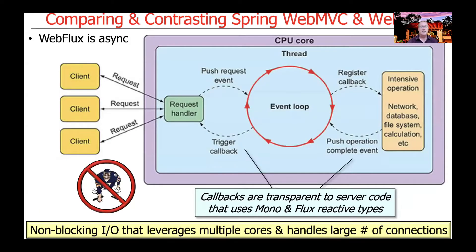In contrast, WebFlux is asynchronous, and therefore it's better equipped to leverage multiple cores with a small number of threads and handle a large number of connections. Under the hood, there are event loops running serviced by different cores. When you do operations using the Project Reactor APIs for Fluxes and Monos, they're basically manipulating the information you pass and handing it off to threads running out of a thread pool, with callbacks happening behind the scenes.